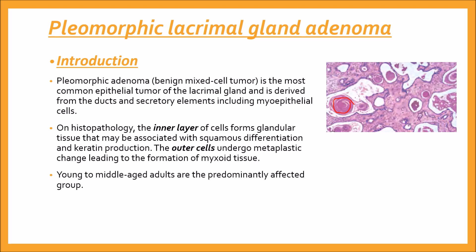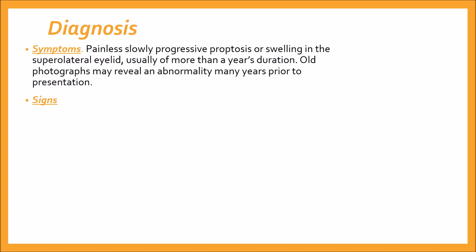Young to middle-aged adults are the predominantly affected group. Diagnosis is based on symptoms, signs, and investigation. The patient presents with painless, slowly progressive proptosis or swelling in the superolateral eyelid, usually of more than a year's duration. Old photographs may reveal an abnormality many years prior to presentation.